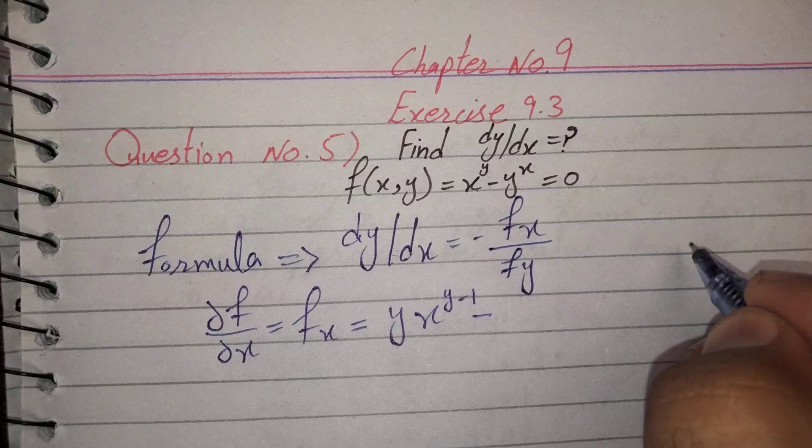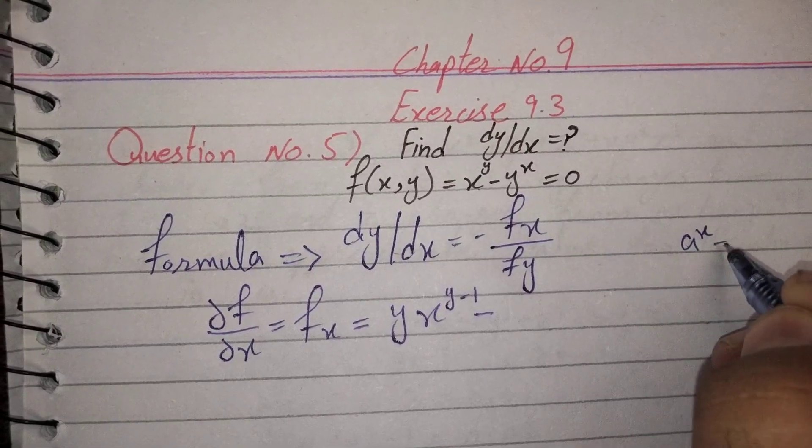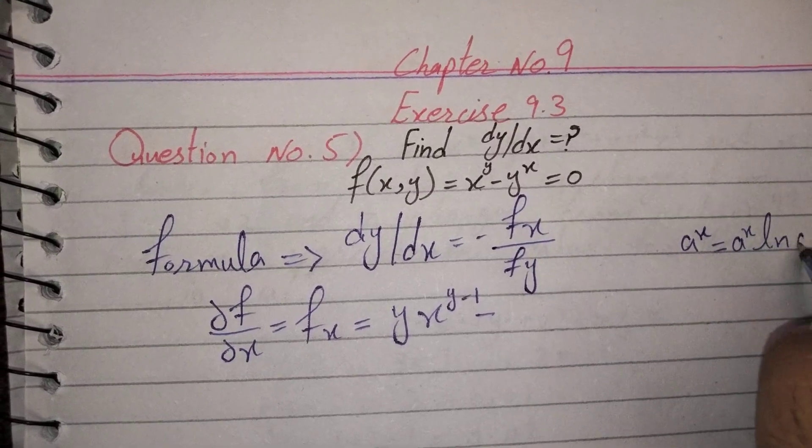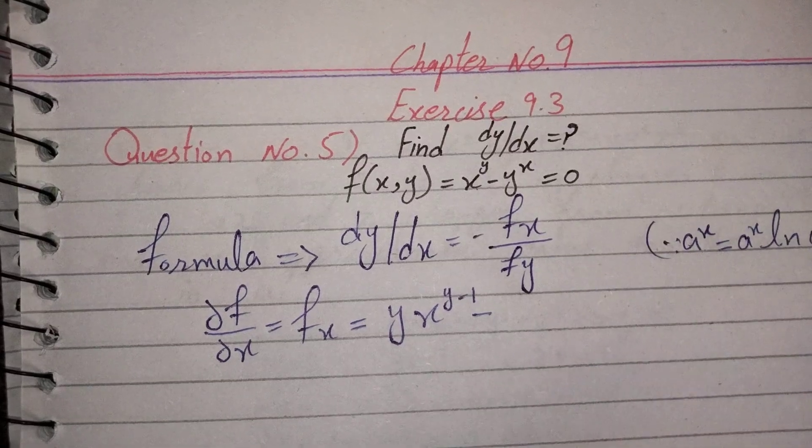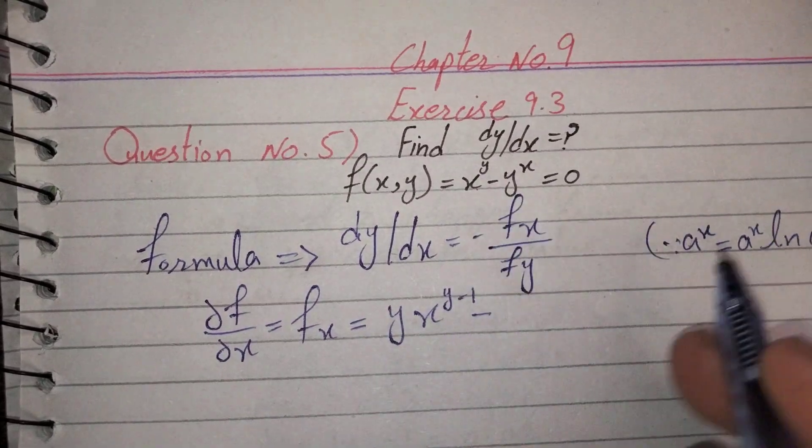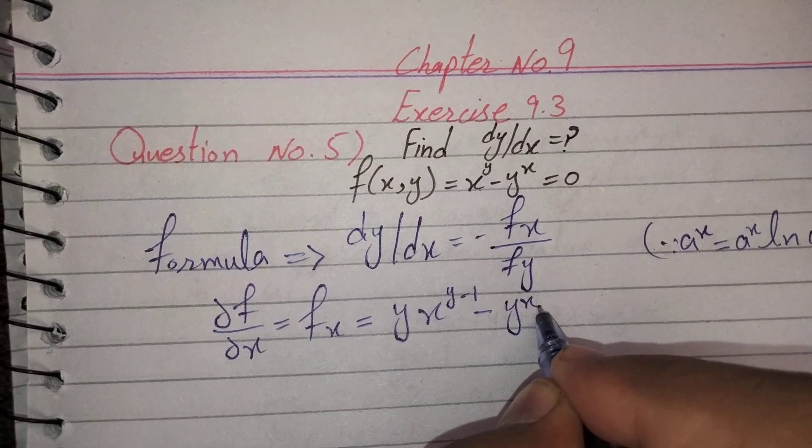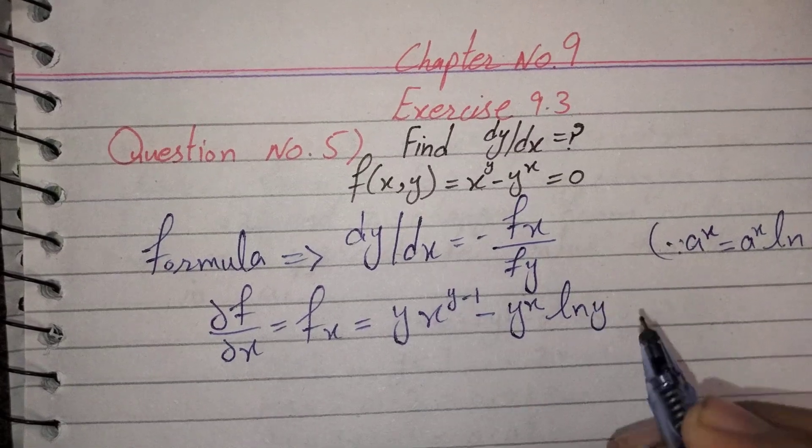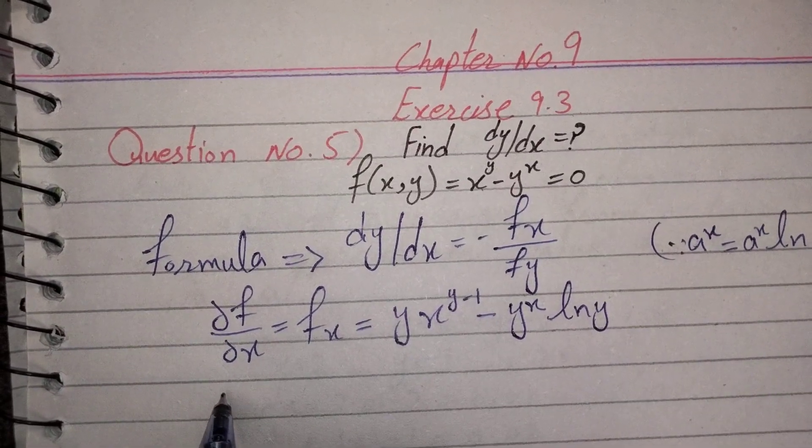The function a^x is equal to a^x log a. So we can write this as yx^(y-1) log y. Similarly, now we will find partial f over partial y.